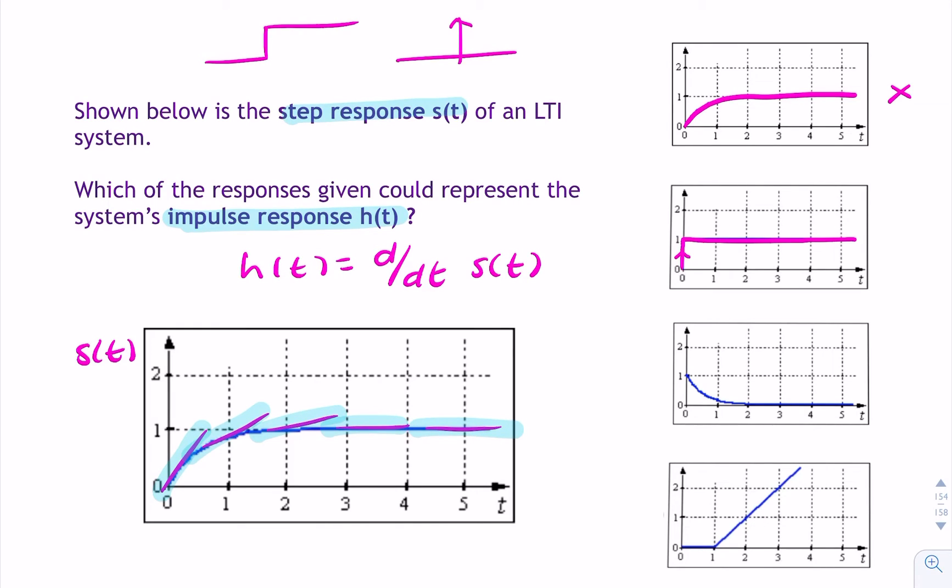So here we have a gradient, which is 1 at the beginning, and then it decreases, decreases, decreases, until it approaches 0. So it looks like this is going to be our impulse response. And if we look at the last option,